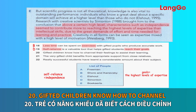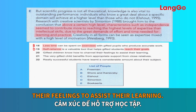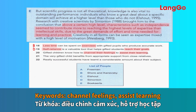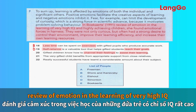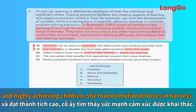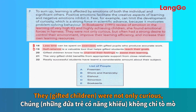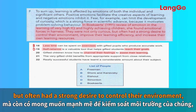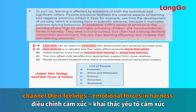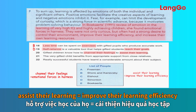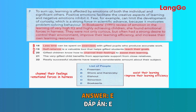Question 20: gifted children know how to channel their feelings to assist their learning. Our keywords are channel feelings and assist learning. Looking at the last paragraph, in Bookert's 1991 review of emotion in the learning of very high IQ and highly achieving children, she found emotional forces in harness. They — gifted children — were not only curious, but often had a strong desire to control their environment, improve their learning efficiency, and increase their own learning resources. Channel their feelings and emotional forces in harness have the same meaning, as do assist their learning and improve learning efficiency. Our answer is E.